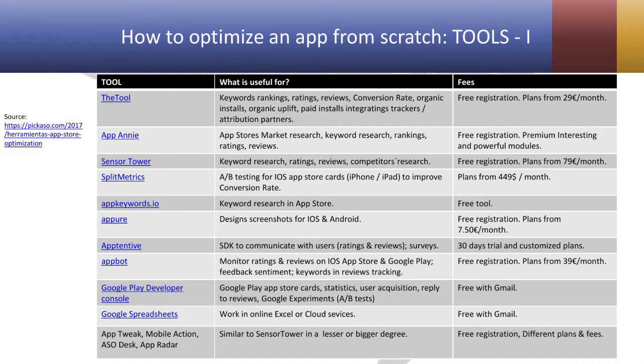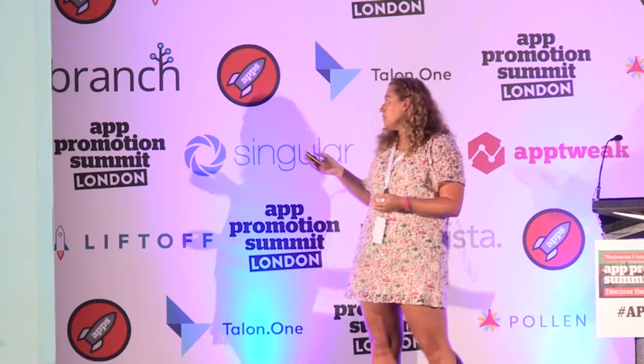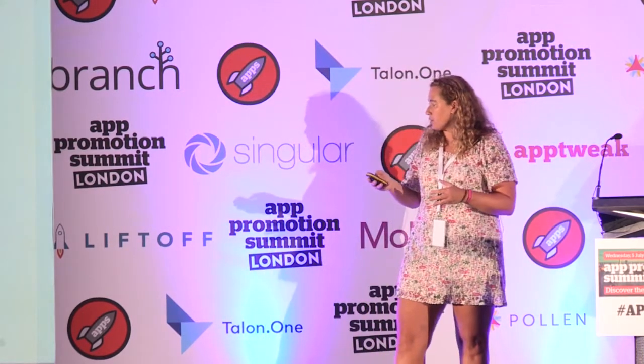This list comes from a resource that a Spanish company called Picasso published some months ago. The first step is to do a specific keyword research for your app. In this case, these are educational apps in English, mathematics, and Spanish. You can use ASO-specific tools like ASO Desk and Apani, the keyword planner for AdWords, a keyword tool focused on the App Store, and then Google Trends and specific keyword searches for SEO. We gave a different weight to each of the tools.